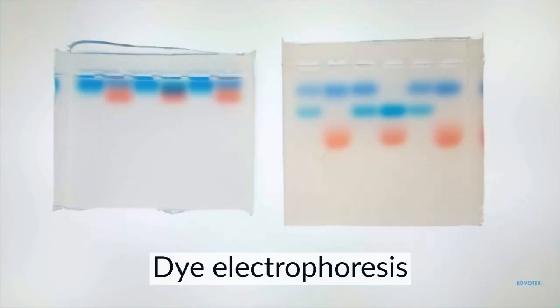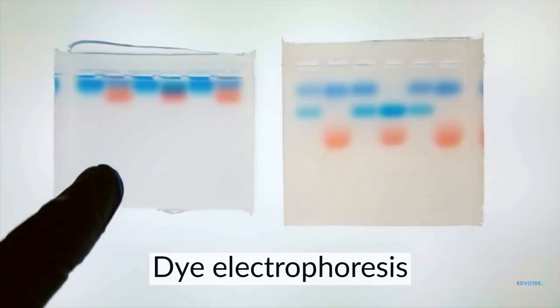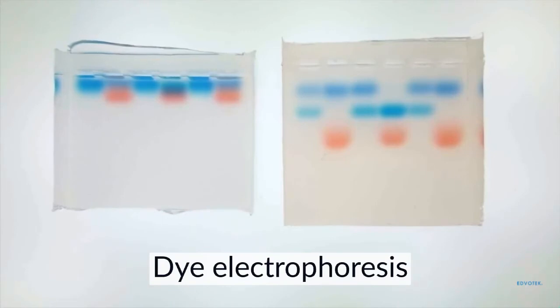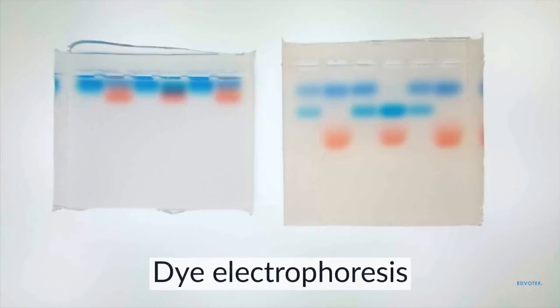The gel on the right hand side used buffer and the gel on the left hand side used water. What you can see is that on the right hand side there is a really good separation between the dyes. We can see clear bands. On the left hand side, where we used water, you don't get that same separation and migration. All the dyes are clustered near the top.